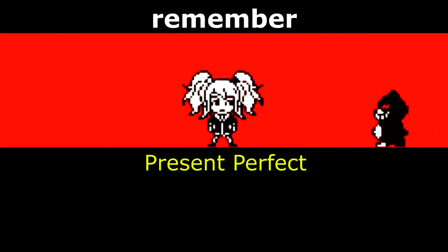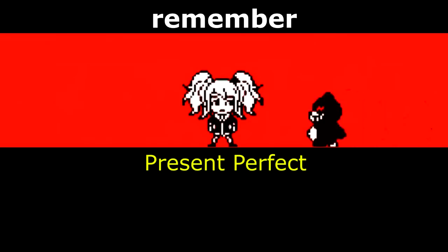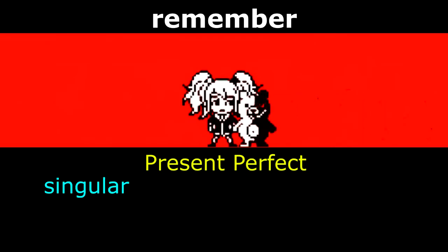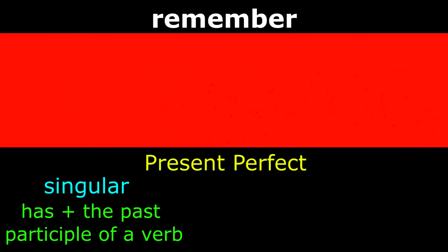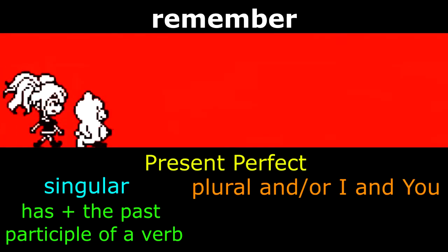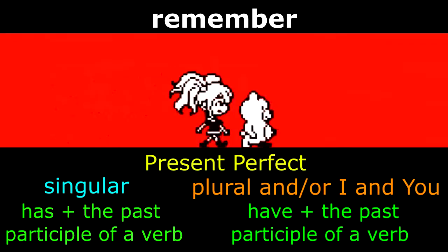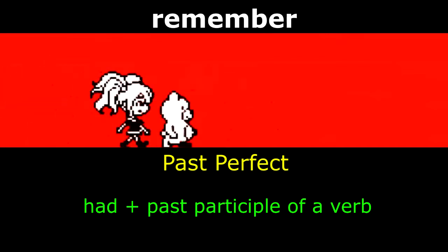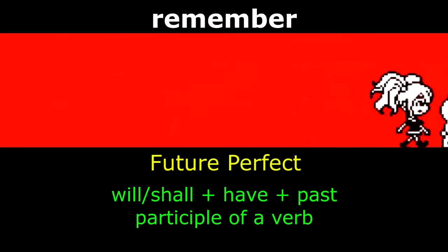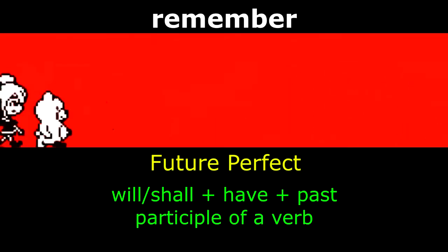In other words, the specific future time given in the sentence is an estimated duration for her to complete the action. Remember: in present perfect tense, if the subject is singular use 'has' plus the past participle, but if the subject is plural or pronouns 'I' and 'you,' use 'have' plus the past participle. Past perfect is formed using 'had' plus the past participle, and future perfect is formed using 'will' or 'shall' plus 'have' plus the past participle.